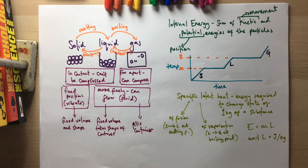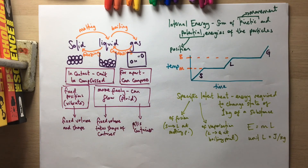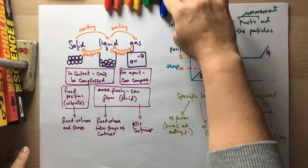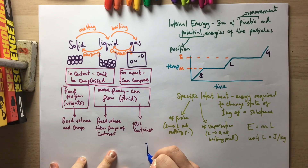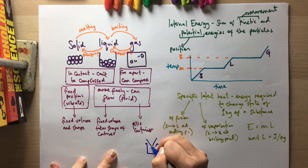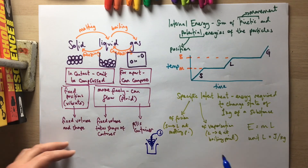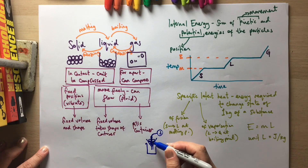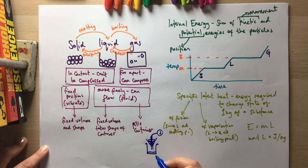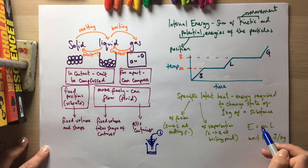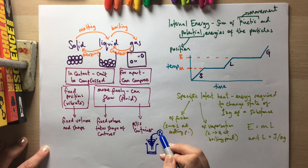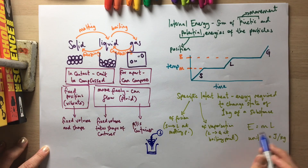There is a practical to measure the specific latent heat. The way we did this in class was to have a beaker with a funnel containing ice and a heater, with the heater connected to a joule meter. You turn the heater on, it melts some of the ice, and you collect the water. You measure the mass of the water that has changed state, and you know the energy from the joule meter. So you do energy divided by mass to get the specific latent heat.